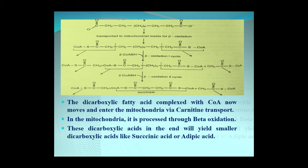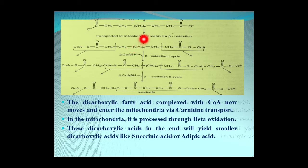This fatty acid is transported to the mitochondrial matrix for beta oxidation. The dicarboxylic acid first complexes with coenzyme A, which is attached to both of its ends for further oxidation. It then enters the mitochondria via carnitine transport, where it is processed through beta oxidation. These dicarboxylic acids will ultimately yield smaller dicarboxylic acids such as succinic acid or adipic acid.